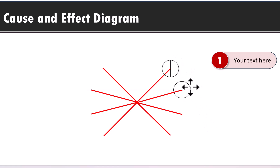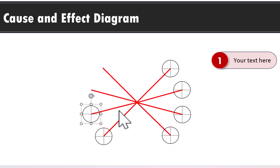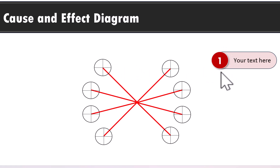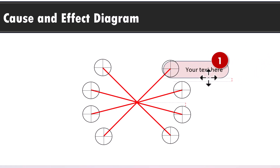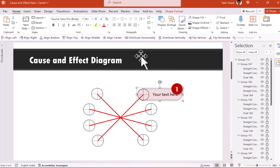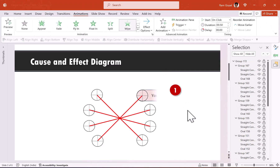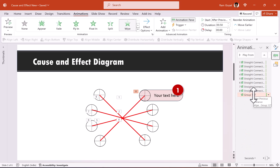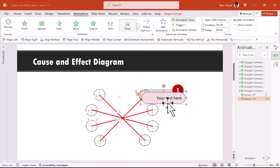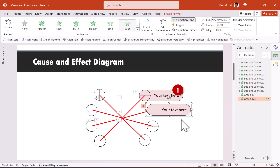Press Ctrl+D to duplicate the crosshair group and place it at each spoke tip. These elements serve as guides for placing the number placeholders. Before duplicating, animate the label shape first — set it to Wipe from Left, After Previous. Once animated, press Ctrl+D to copy it and the animation copies along automatically, making it easy to place all subsequent label shapes.